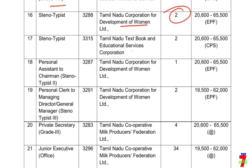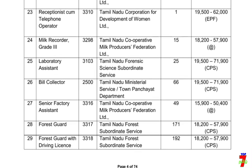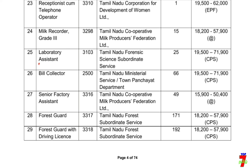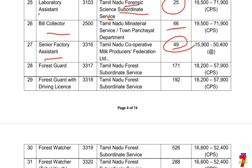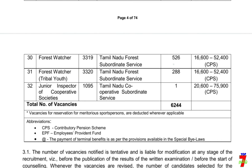Tamil Nadu Textbook and Educational Services Corporation — this is 2 vacant posts. So this is the first category. This is the Lab/Bench Assistant — that is Forensic Science Subordinate Service — this is 25 vacant posts. This is the Bill Collector — there are 61 vacant posts. This is the Senior Assistant — this is 41 vacant posts. The Forest Guard with Driving License has 425 vacant posts.